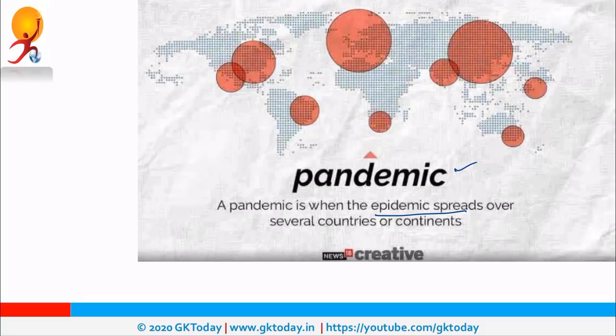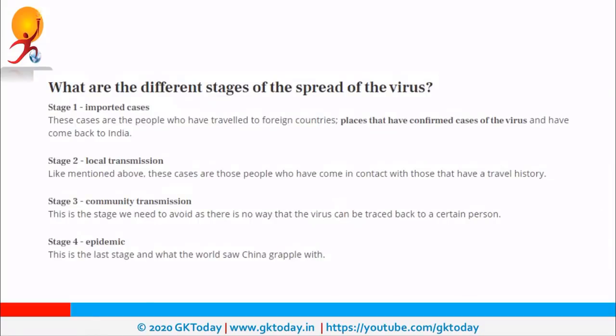Now we will discuss the stages of transmission of coronavirus. The first stage was imported cases — it means only those people who had a travel history were infected, specifically those who came from China or from any other area which was infected. This was the first stage.